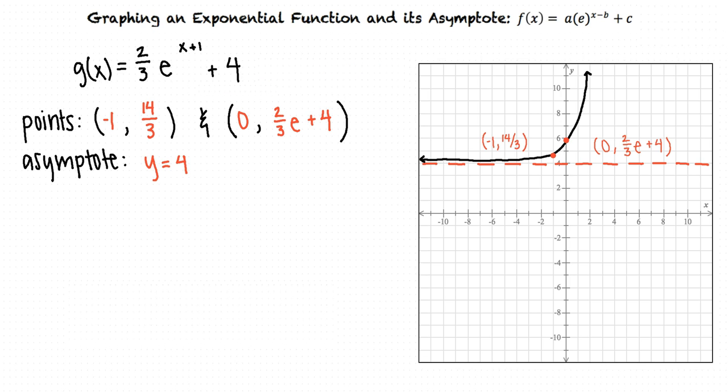Okay, so to graph an exponential function and its asymptote, we need to first find two points that lie on the graph. To do this, we can first find g(x) for an x value that makes the exponent zero, and we can find g(x) for an additional x value. We can find the asymptote by determining what horizontal line the graph approaches as its x values decrease without bound. When we know these pieces, we can complete the graph of our function. That's exactly right! Great work!